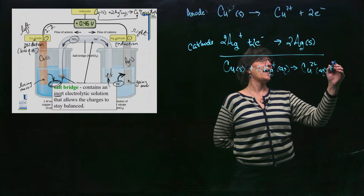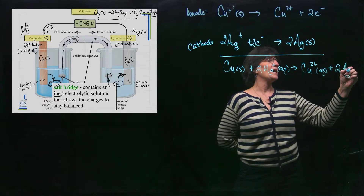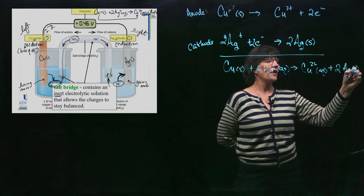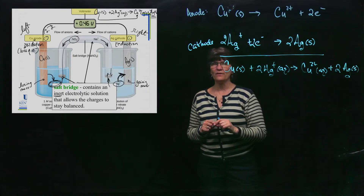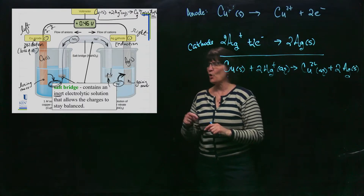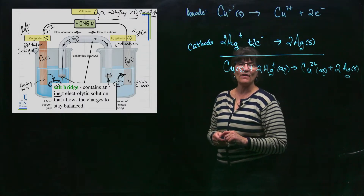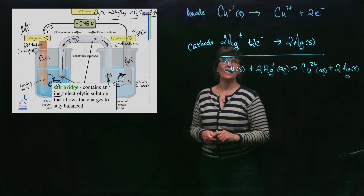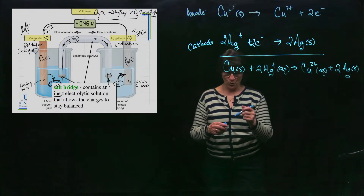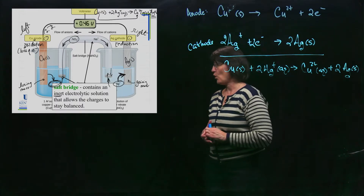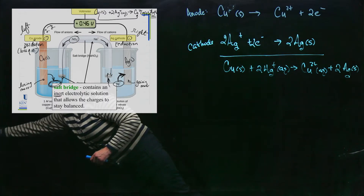The net equation is the same whether the reactants were touching each other and transferring electrons directly in a test tube, or you set up this galvanic cell and force those electrons to transfer across a wire to get from one place to the other.